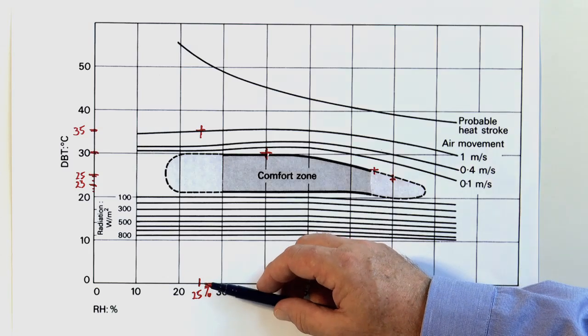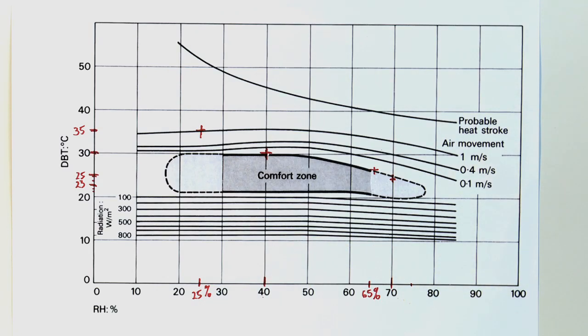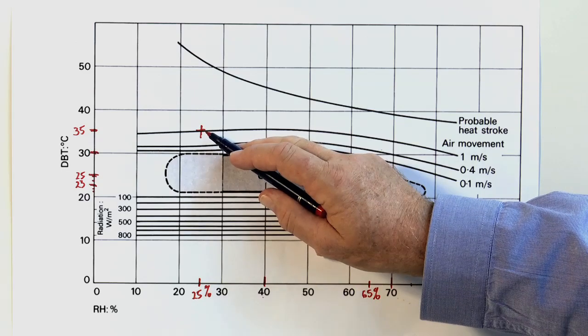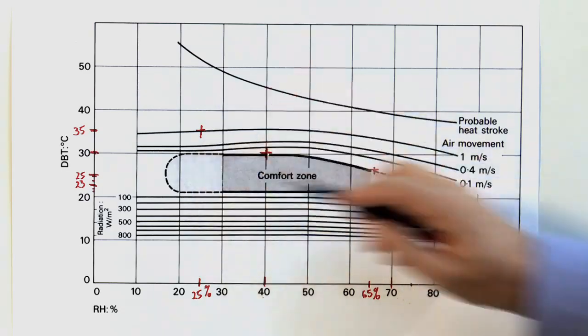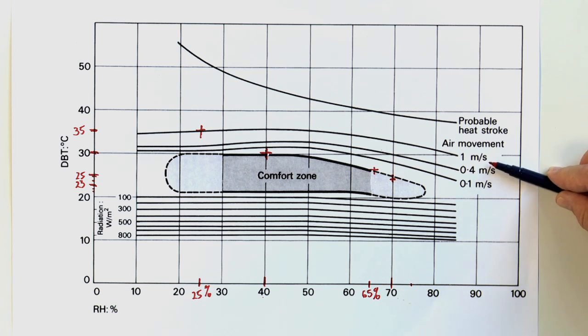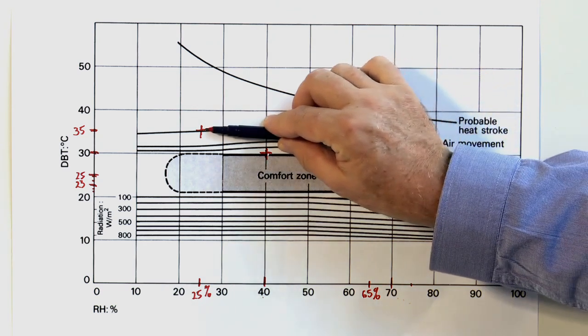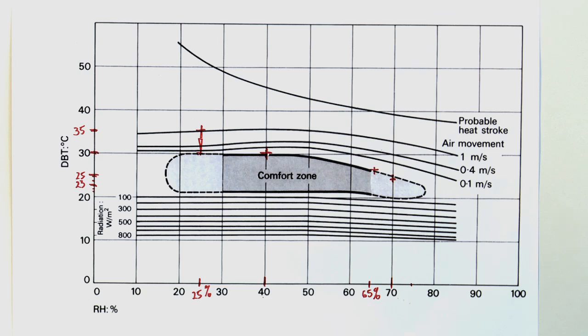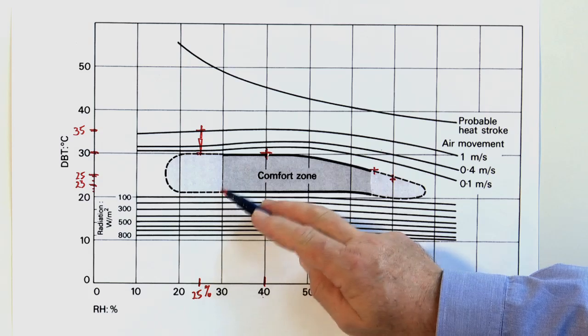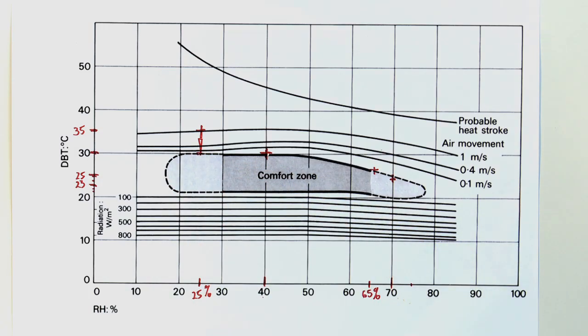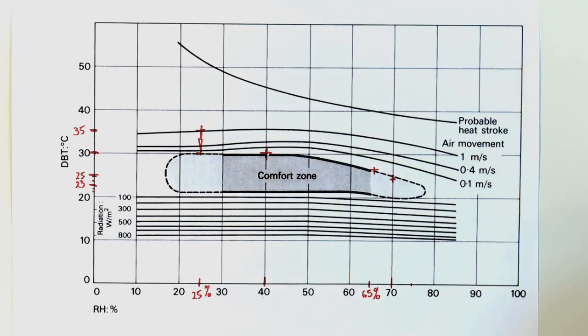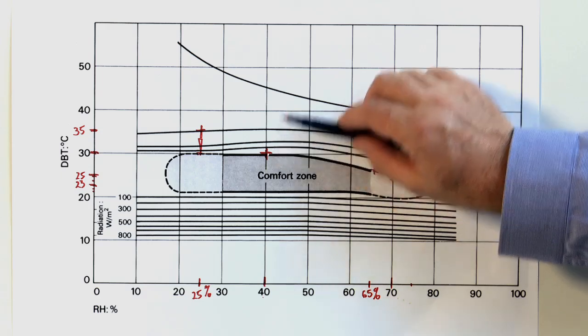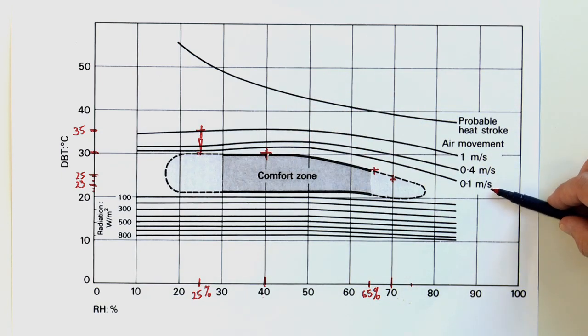And so in the case here of 25% relative humidity and 35 degrees dry bulb temperature, by introducing air movement at one metre per second we can pull the temperature down to something that would simulate a comfortable zone. The trouble is here we are again in this dashed line which is borderline for human comfort. The beauty of the bioclimatic chart is we can see how we can use air movement to pull the temperature down.